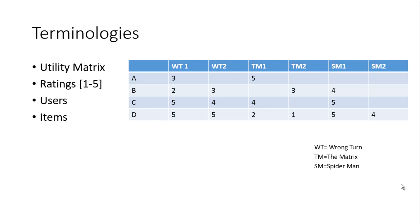So our utility matrix contains the ratings of each user against each movie. I have expanded the abbreviation of each movie name in right bottom corner.